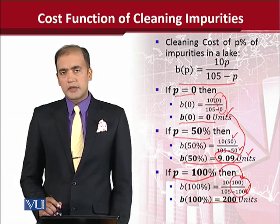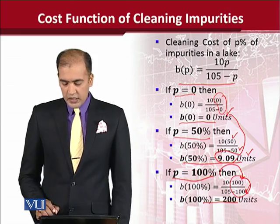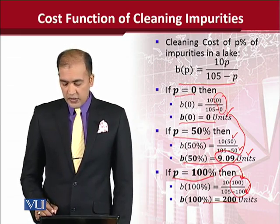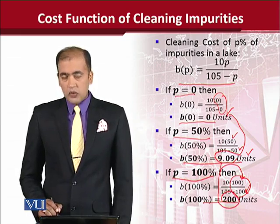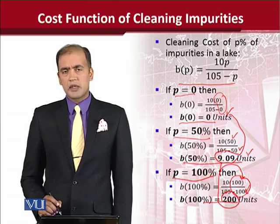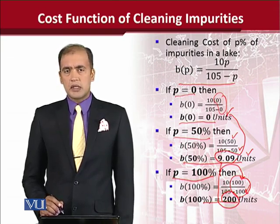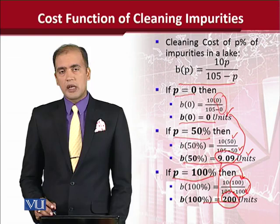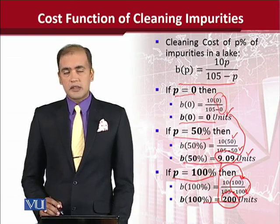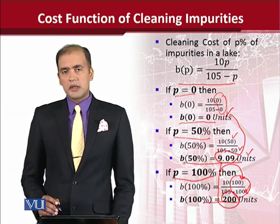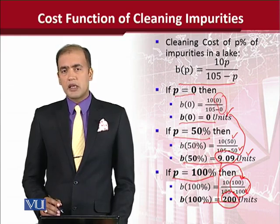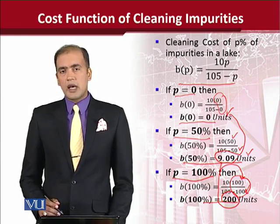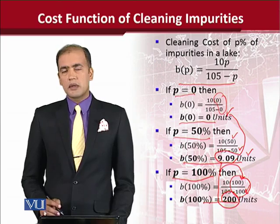We are using units generally since we are not specifying whether these are rupees, pounds, or dollars. The additional 50% of cleaning requires 200 units — a substantial increase of perhaps 190 units compared to the cost at 50%. So there is a startling increase in cost when we surpass 50% and try to achieve 100%. Perhaps after 50%, the cleaning has become more difficult and costly.